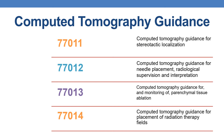Now coming to the next radiological guidance type: computed tomography guidance. The CPTs are as follows. CPT 77011 deals with computed tomography guidance for stereotactic localization. CPT 77012 deals with computed tomography guidance for needle placement, radiological supervision, and interpretation. CPT 77013 deals with computed tomography guidance for and monitoring of parenchymal tissue ablation. CPT 77014 deals with computed tomography guidance for placement of radiation therapy fields.